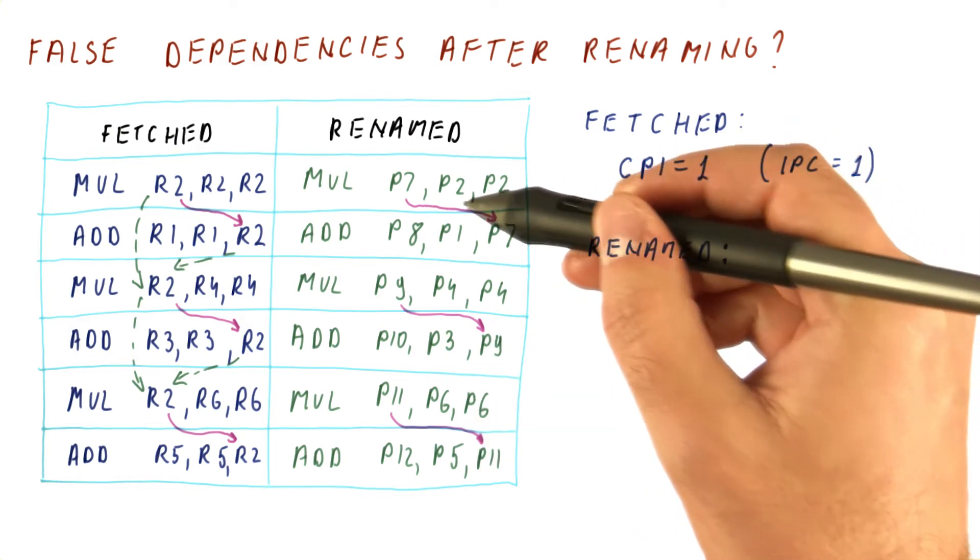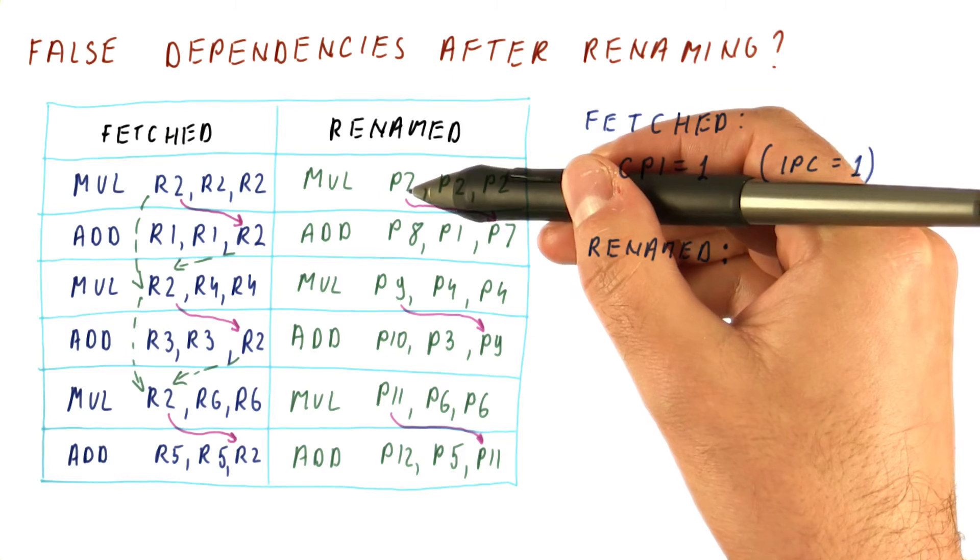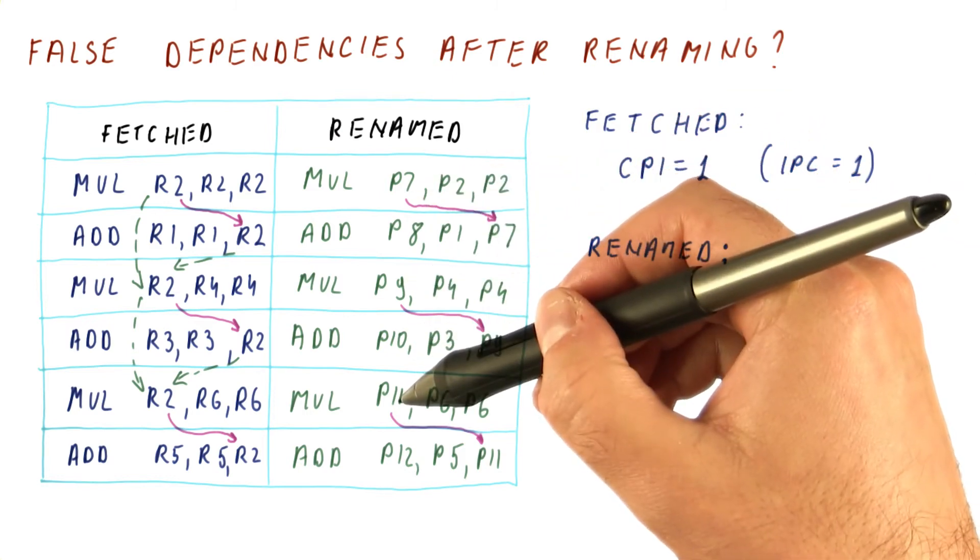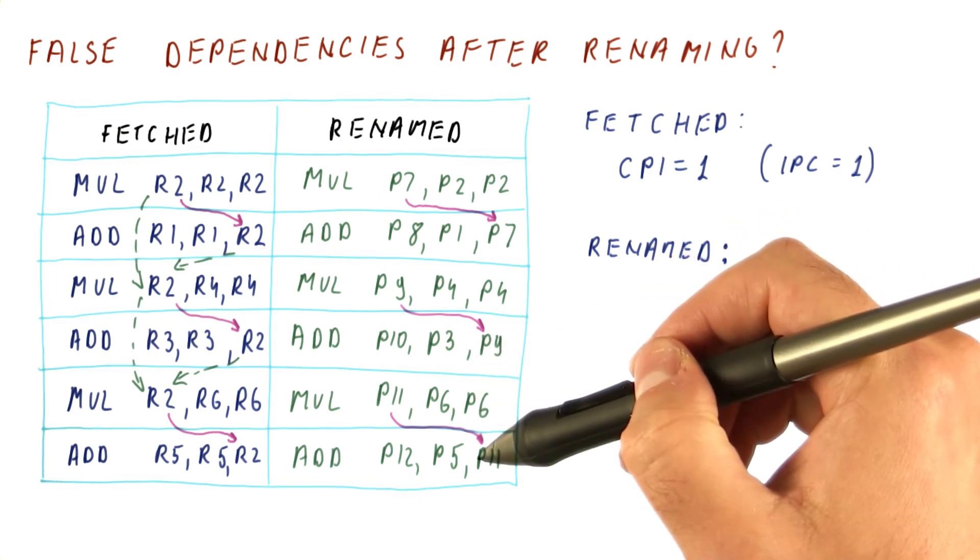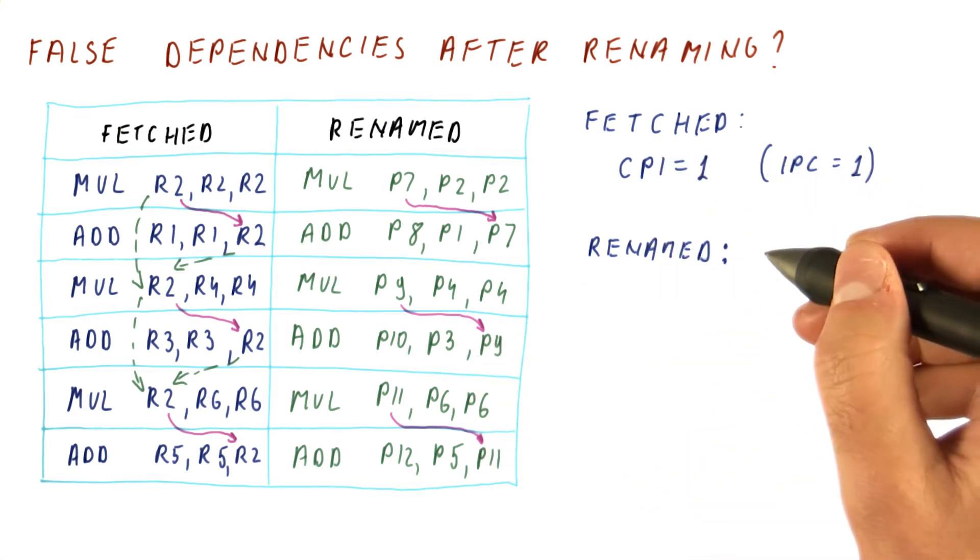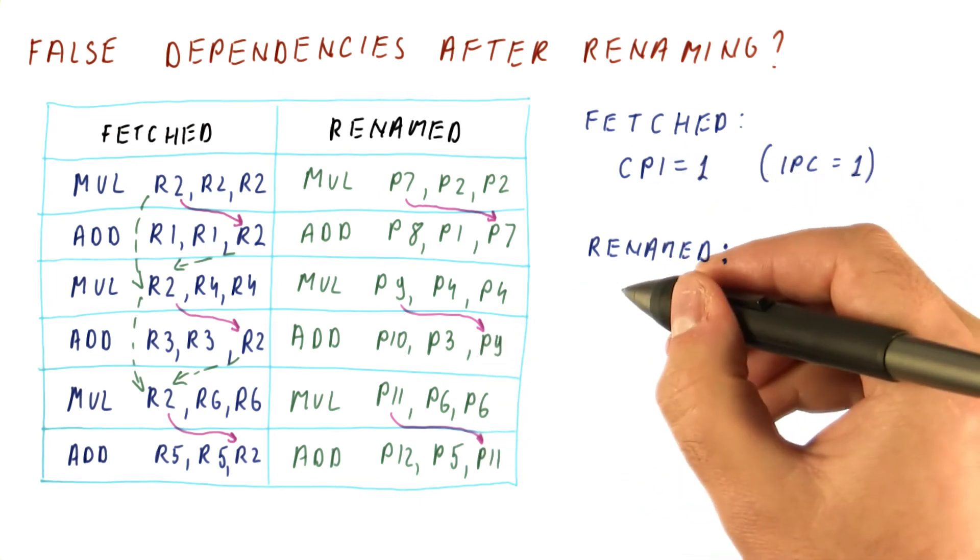So for our rename program, now we have that we can execute three instructions in the first cycle. These three can be done in the second cycle. So overall, we have six instructions over two cycles.